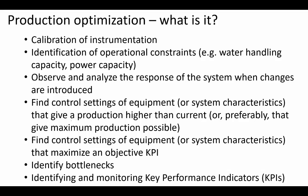Calibration of instrumentation is also important. We trust the values from instruments for rates and pressures, but these instruments can often be uncalibrated and give wrong readings. You might think things are fine when actually there's a problem. Additionally, you should identify operational constraints — water handling capacity, power capacity, gas processing capacity — not only when they are bottlenecking production, but beforehand.